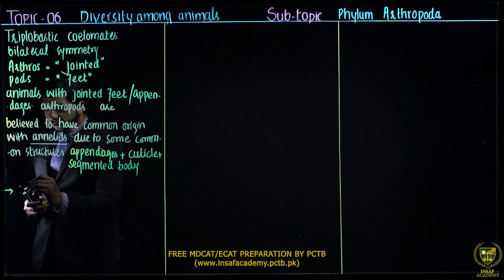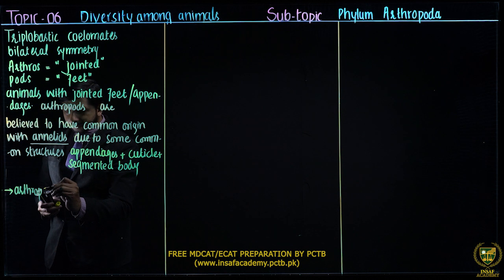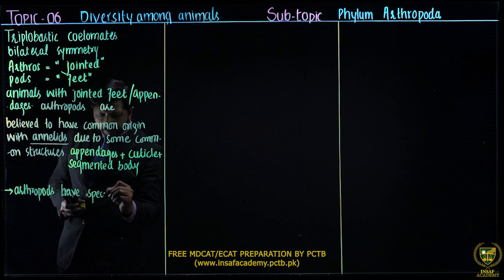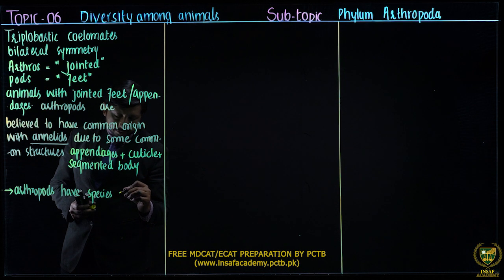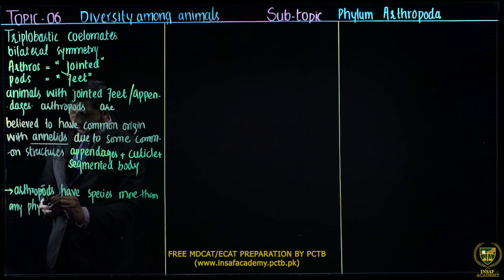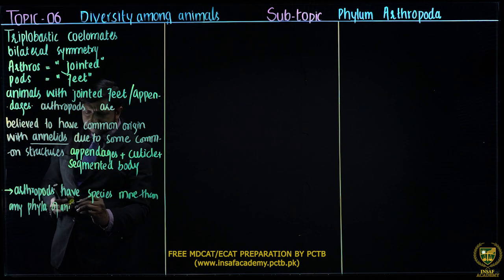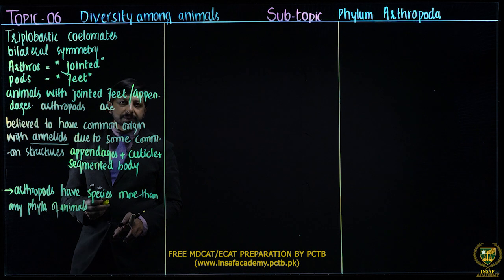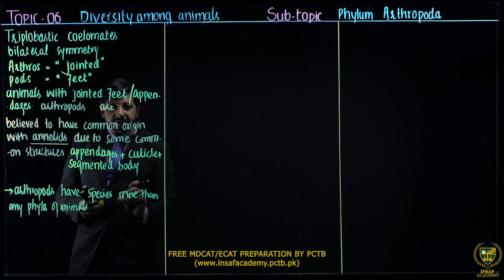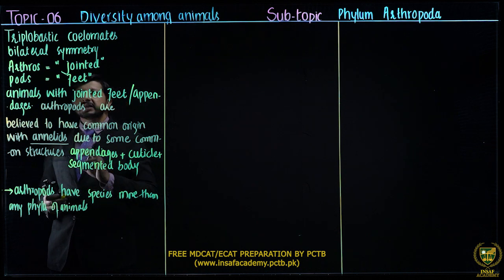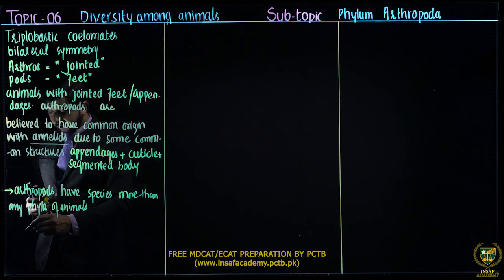Another important thing: arthropods have more species than any other phylum of animals. Among all animal phyla, the most species are found here. The class Insecta — the insects — makes up 53.1%, which is why insects represent the greatest variety.